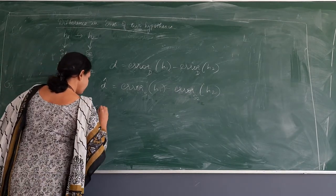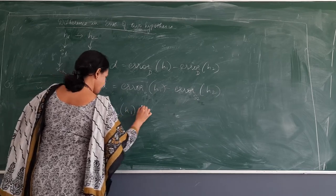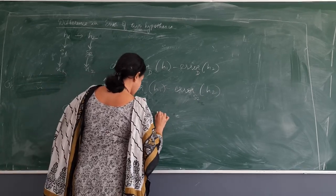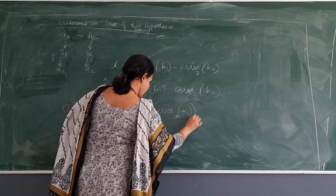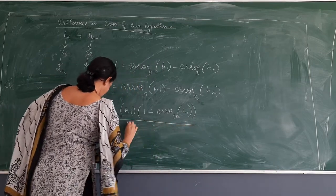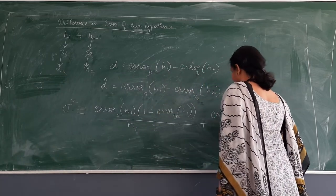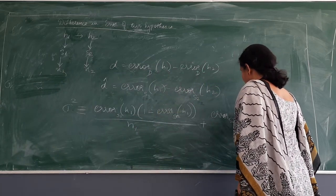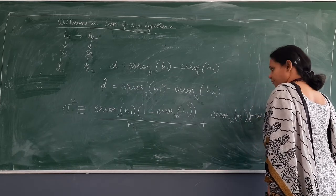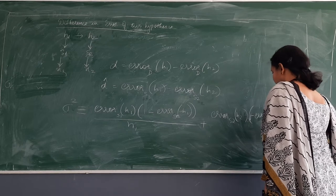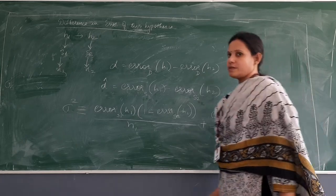So for the first sample, it is: error of H1 for sample S1, times 1 minus error of H1 for sample S1, divided by N1; plus error of H2 for sample S2, times 1 minus error of H2 for sample S2, divided by N2. This is my variance — it is nothing else but the sum of the errors.